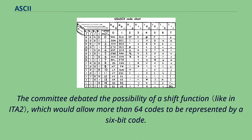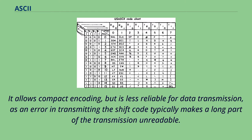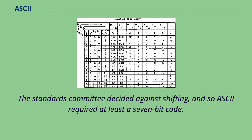The committee debated the possibility of a shift function, which would allow more than 64 codes to be represented by a 6-bit code. In a shifted code, some character codes determine choices between options for the following character codes. It allows compact encoding, but is less reliable for data transmission, as an error in transmitting the shift code typically makes a long part of the transmission unreadable. The Standards Committee decided against shifting, and so ASCII required at least a 7-bit code.